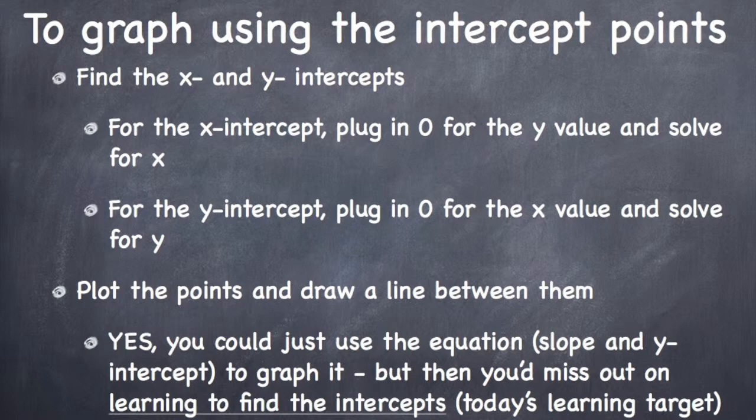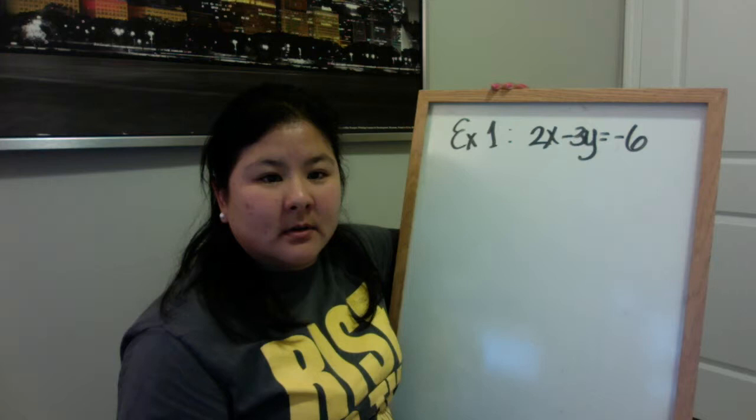Yes, I could just transform everything into slope intercept form from the beginning and then use rise over run to graph it like we've always been doing. However, that's not the point of today's lesson. Today's lesson is all about you learning to graph using the intercept points.